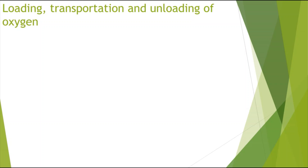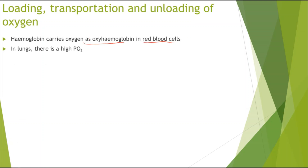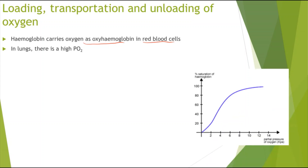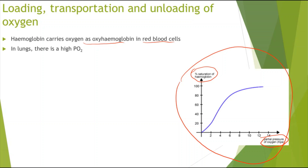Looking at the loading, transportation, and unloading of oxygen — hemoglobin carries oxygen as oxyhemoglobin in red blood cells. You need to be aware of the sigmoid curve, which shows the partial pressure of oxygen on the x-axis against the percentage saturation of hemoglobin on the y-axis. Partial pressure of oxygen is the pressure of oxygen in a given volume, and percentage saturation of hemoglobin is the percentage of oxygen that's combined with hemoglobin.